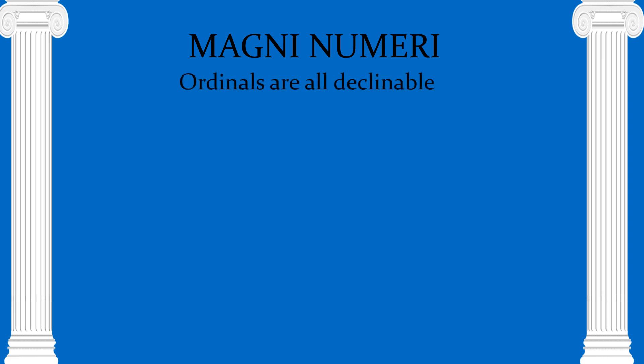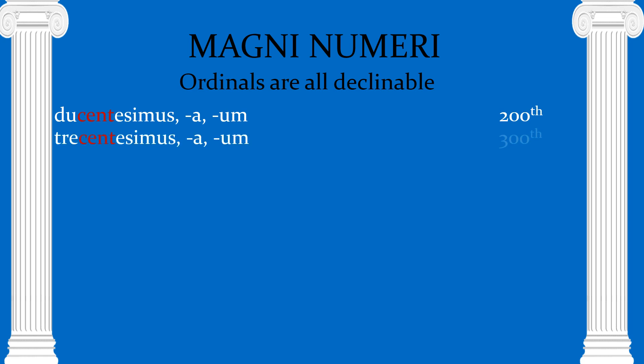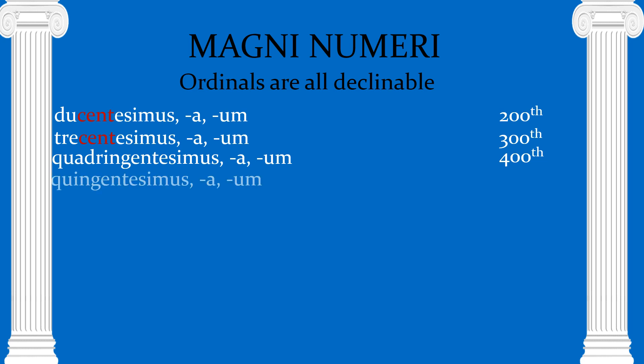Now we go to the ordinals, which are all declinable. Ducentesimus — there's the du-, there's the -cent-, and the -esimus is almost like our -th. So we get two hundredth. Trecentesimus is three hundredth, and we go on and on. These are very long: quadringentesimus for four hundredth, five hundredth, and so on.